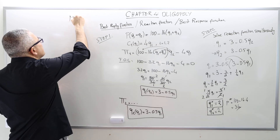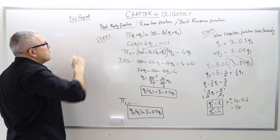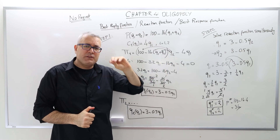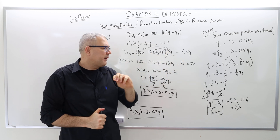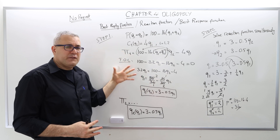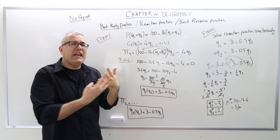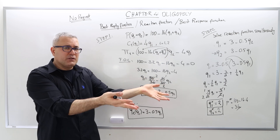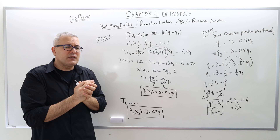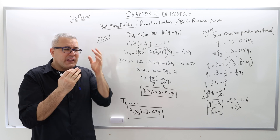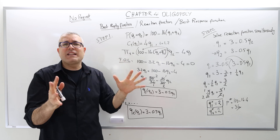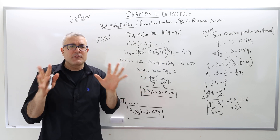So: no regret. Please keep that in mind, because it will play an important role throughout the next three chapters — oligopoly, game theory, and game theory applications. Once again, the Cournot-Nash suggests that the optimal quantities should be such that once the game is over and the firms release their quantities to the market, none of them is going to regret its choice. That's going to be a regret-free outcome.